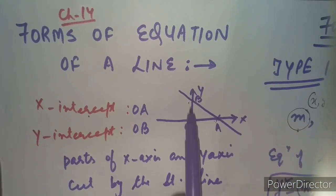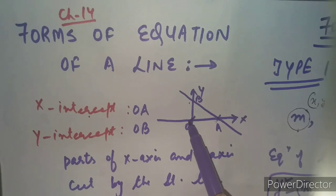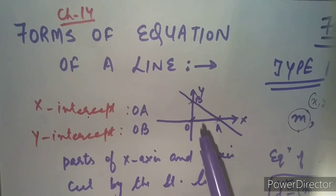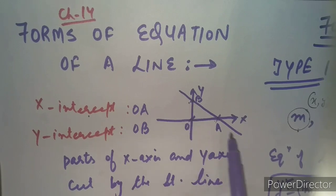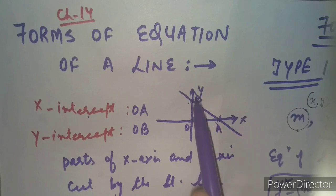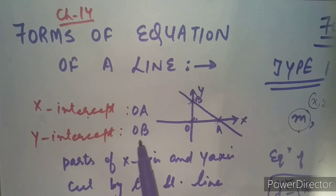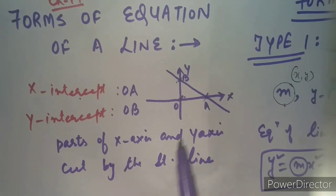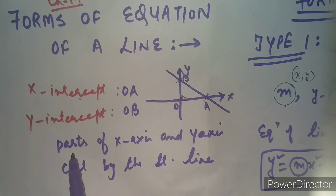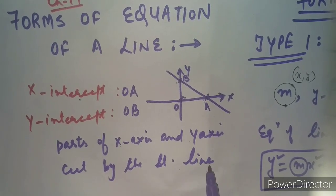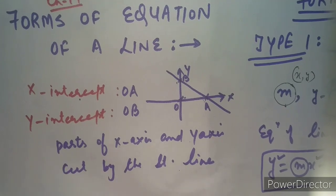In exactly the same way, the portion of the y-axis cut by this line is clearly seen here — it is OB, from O to B. The y-axis was drawn long, but when we drew this straight line, the portion cut by it on the y-axis is known as the y-intercept. So x-intercept and y-intercept are nothing but the parts of the x-axis and y-axis cut by the straight line.